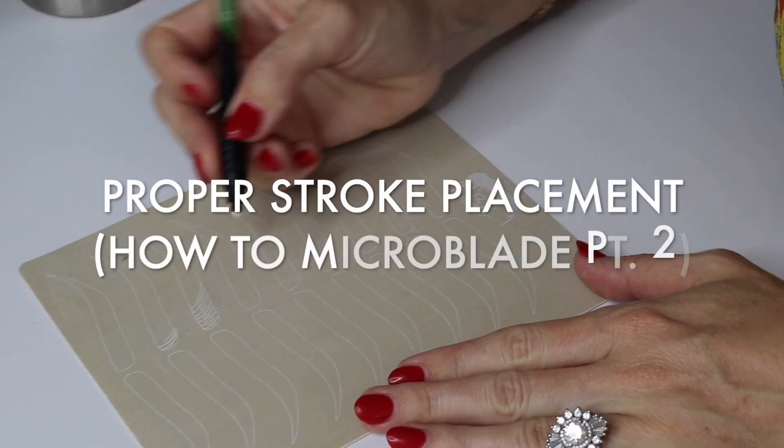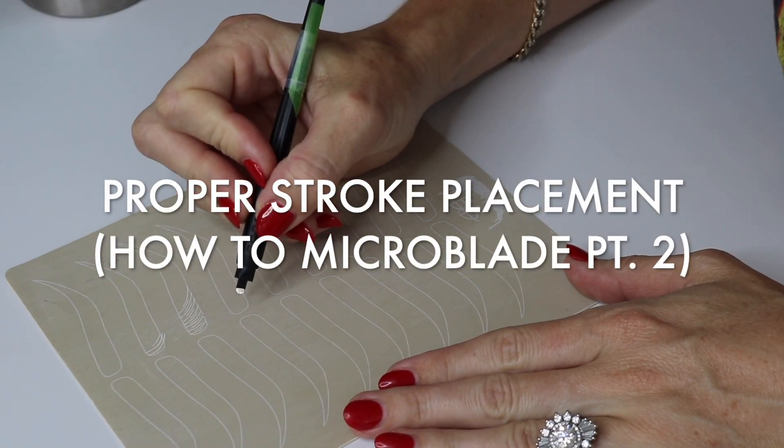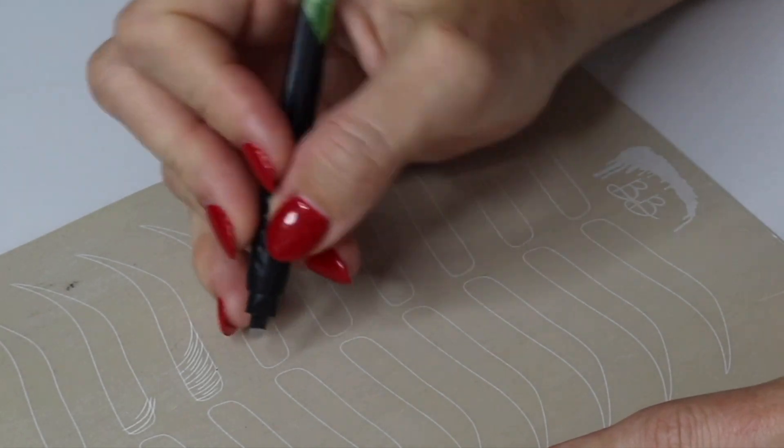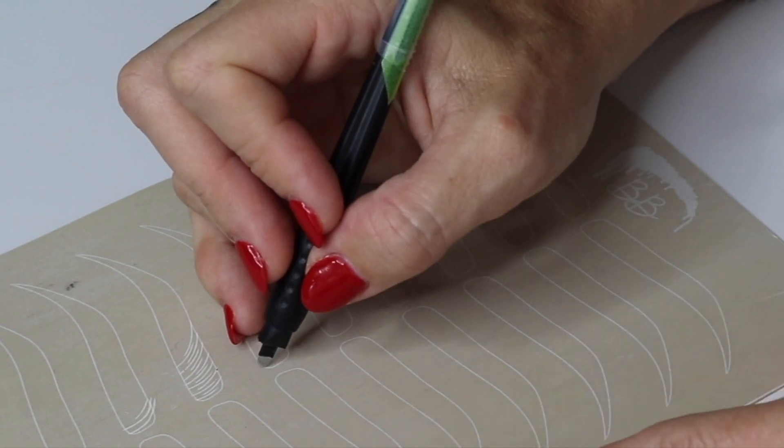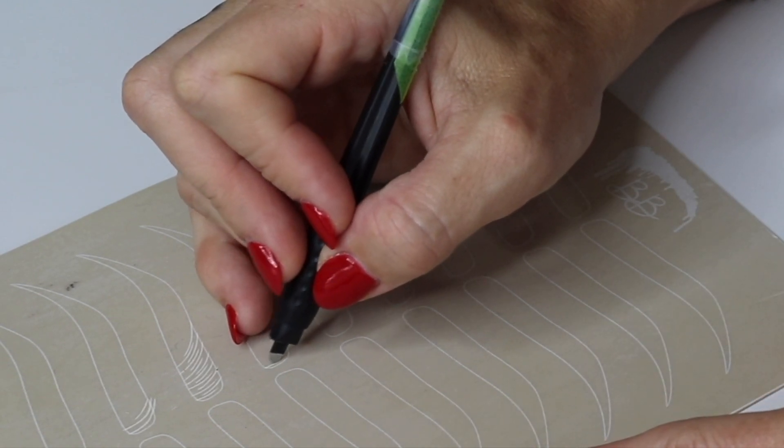Something I noticed that a lot of my students do when they're creating their microblading strokes is they tend to start all of their strokes with their blade. So notice where my blade is with their blade pointing up.